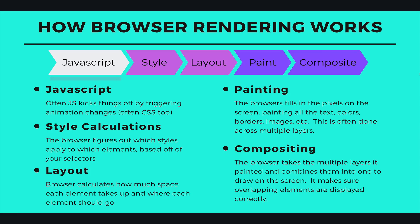Typically something will trigger an animation — let's say it's JavaScript. There's a click event that's fired and that starts the animation. After that, styles are calculated, or often recalculated. The browser needs to figure out which styles apply to which elements based on the selectors. It may need to calculate specificity, figure out if there's a conflict, and determine which selector wins out.